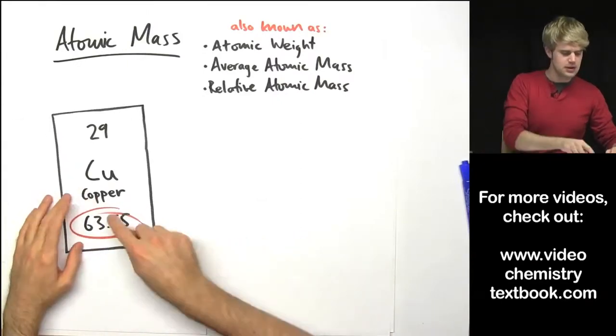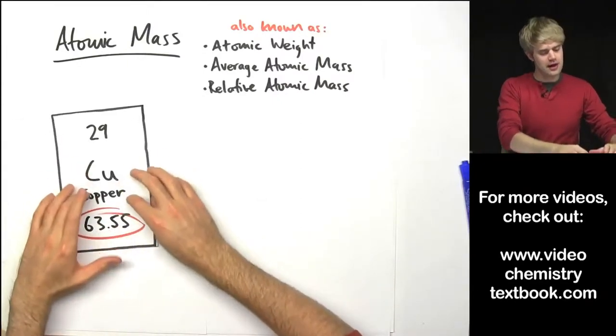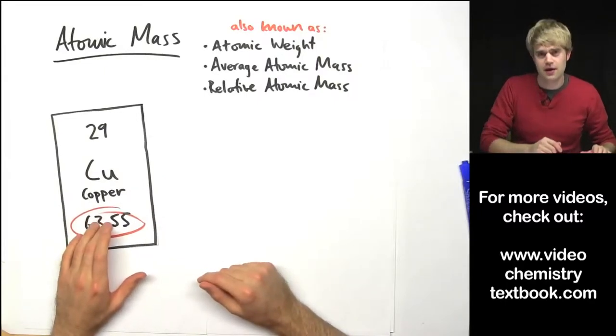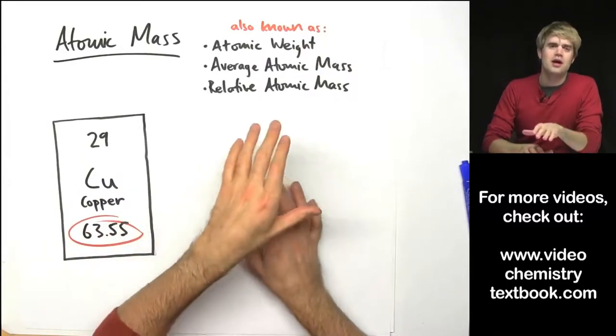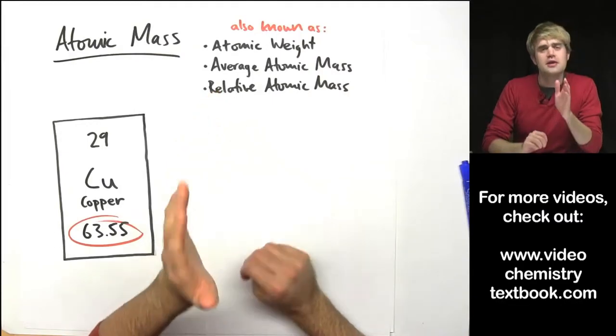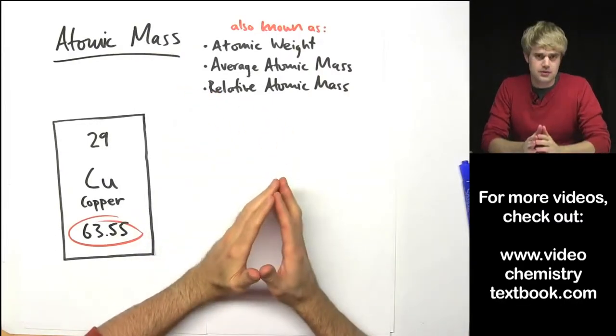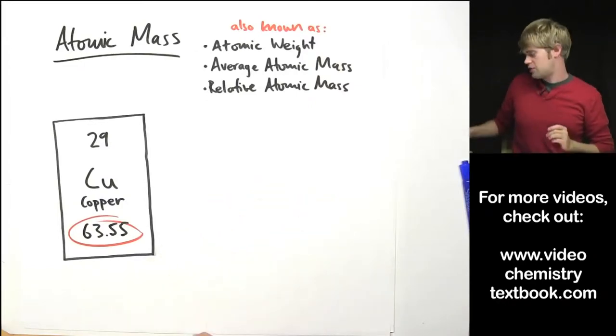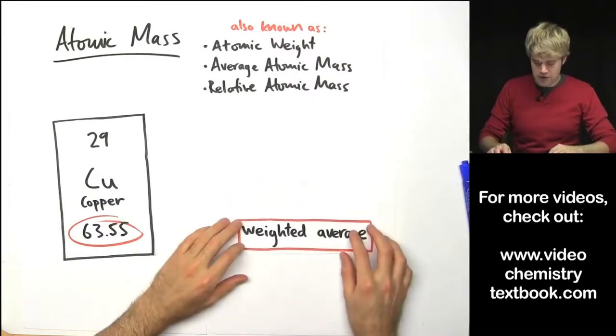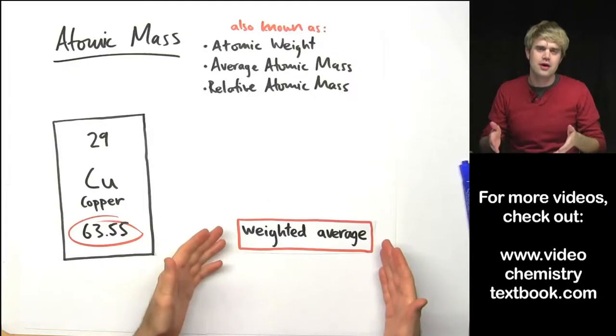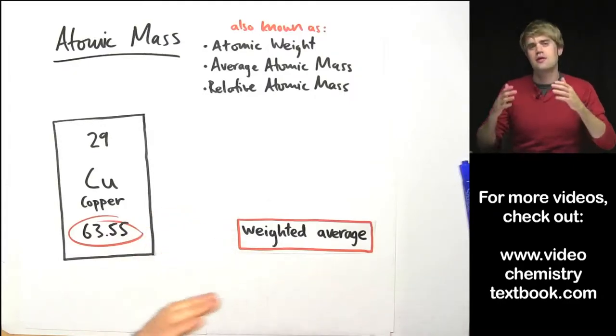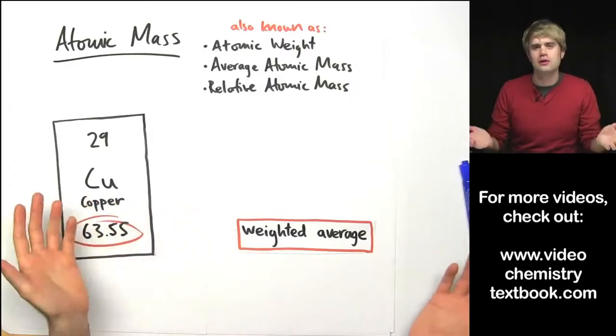And atomic mass is this number that's written underneath the element sign on the periodic table. Now atomic mass is an average. It's an average of the masses of a number of different atoms but it's a special kind of average. It's a special kind of average called a weighted average and this is different than the kind of average that you've probably already learned in math.